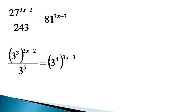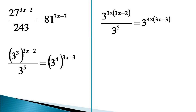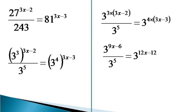Now the indices on the left hand side of the numerator and on the right hand side get multiplied, and the resulting equation becomes 3 raised to the power 9x minus 6 divided by 3 raised to the power 5, equal to 3 raised to the power 12x minus 12.